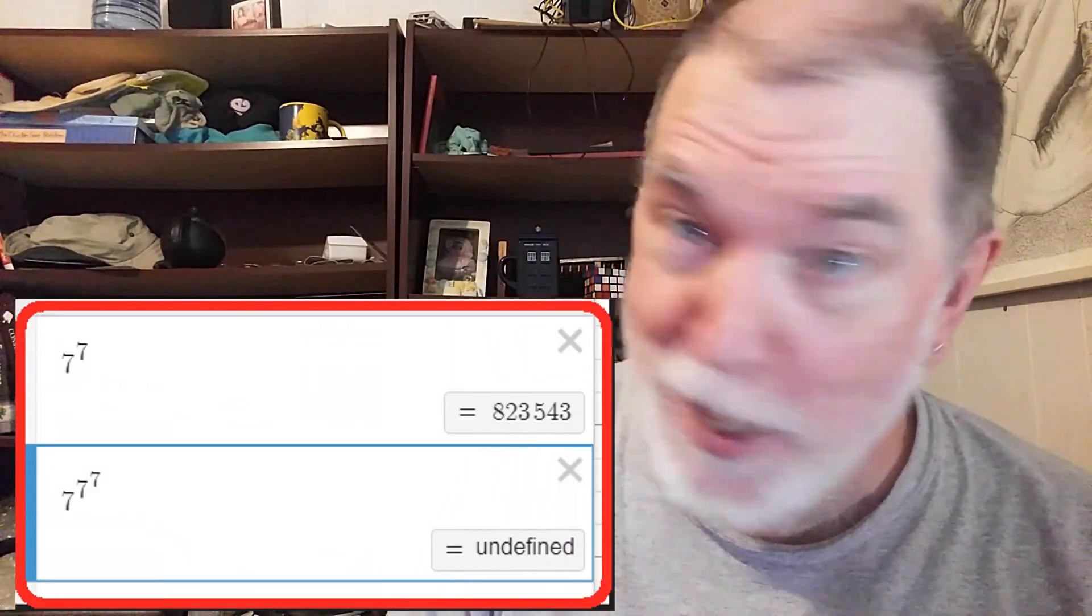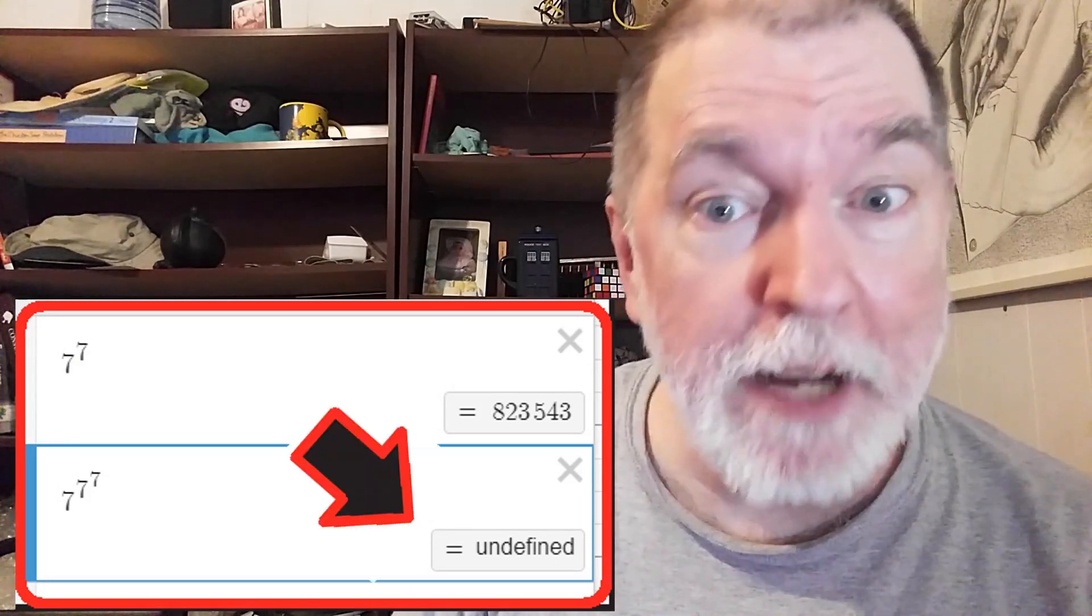We can plug in seven to the power of seven into Desmos. But by the third seven, Desmos gives up. We'll look at some bite-sized powers of seven. And by bite-sized, I mean under two billion.